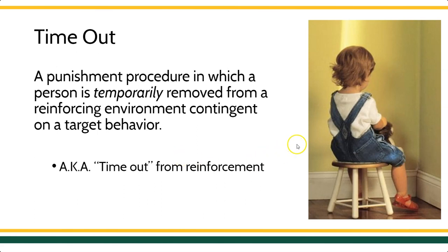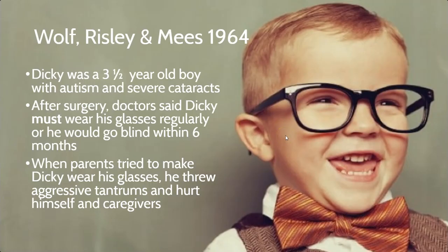One of the earliest examples of a timeout procedure was in the Wolf, Risley, and Mies study from 1964. This is one of my favorite studies, about a kid named Dickey. Dickey was about three and a half. He had autism and he had really severe cataracts — the lenses of his eyes were so thick. The difficulty was that they were going to have surgery for this kid. The doctor said that if Dickey didn't wear his glasses regularly, the surgery would not be effective. If he wasn't actually wearing his glasses, he would go blind within about six months.